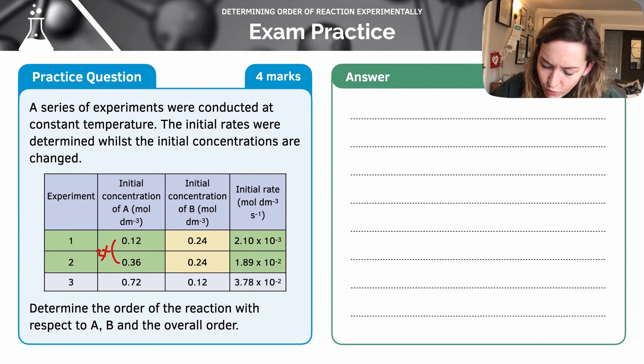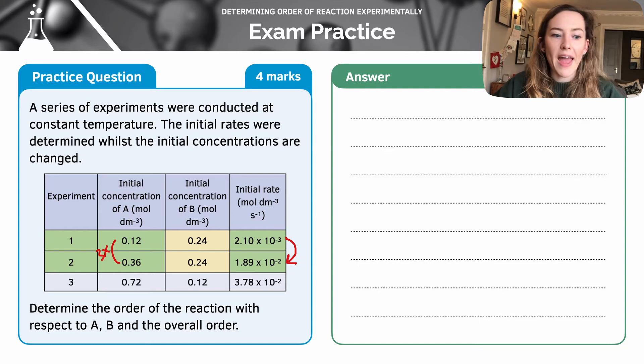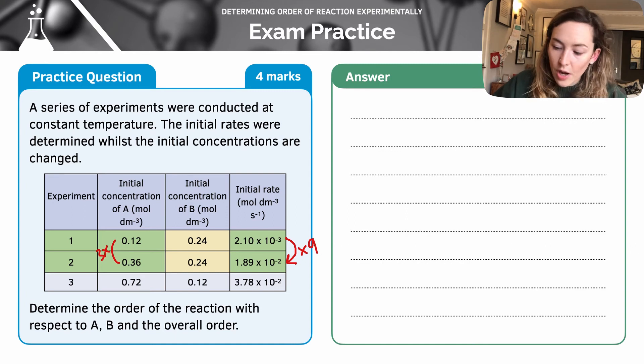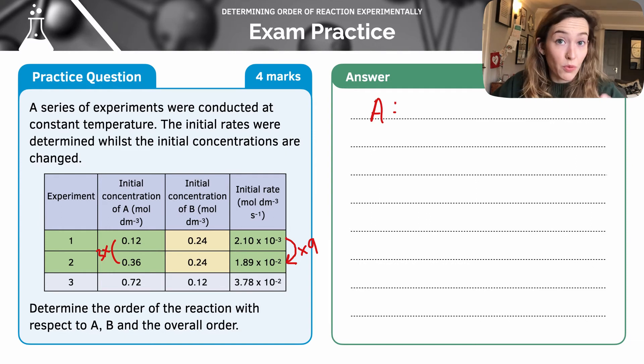And what's happened to my rate? Well, I might need to use a calculator here, but I can see that the initial rate increases by a factor of nine. So I've had a three times increase. Three to the power of two is nine. Therefore, the order of reaction with respect to A must be second order.